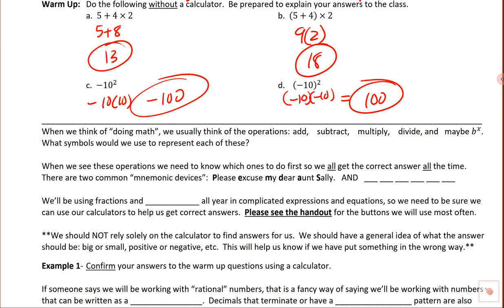When people talk about doing math, they think of adding, subtracting, multiplying, dividing, and exponents. For addition we use a plus sign; for subtraction a minus sign. It's important to be clear on the difference between a subtraction sign and a negative on the calculator. For multiplication we use a dot or parentheses — implied multiplication — but not an x at this level. For division, we almost exclusively use a horizontal fraction bar.